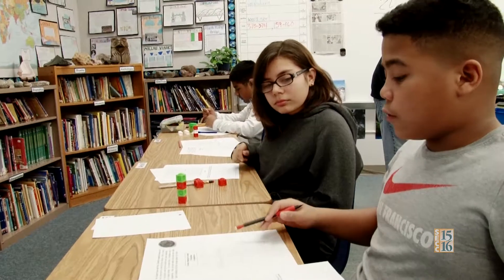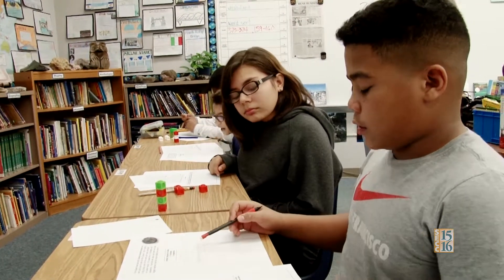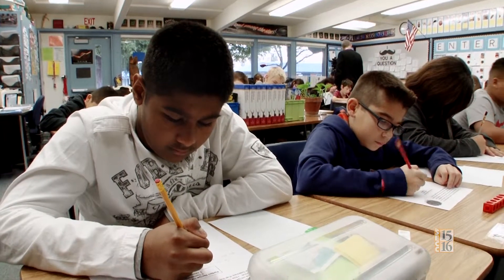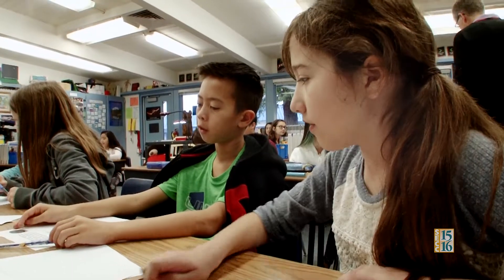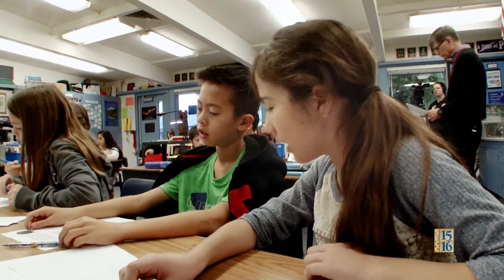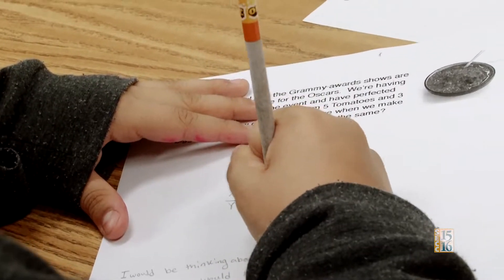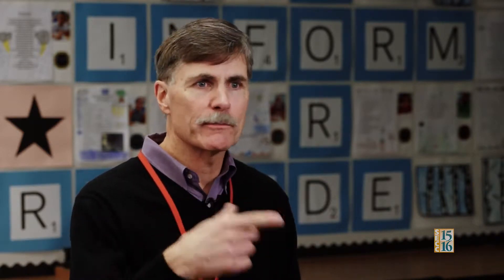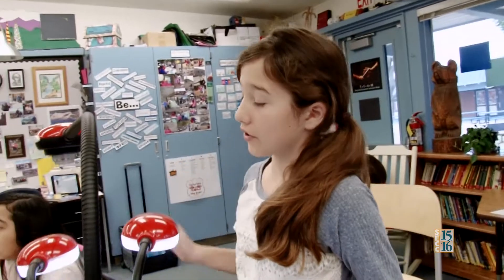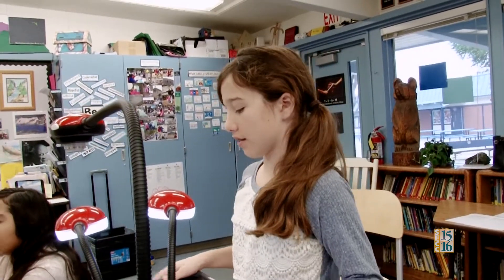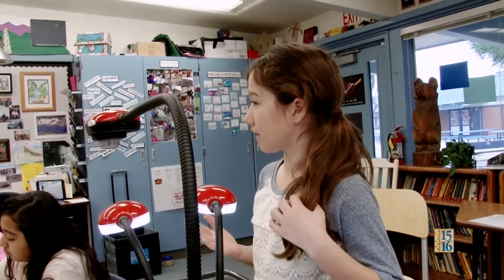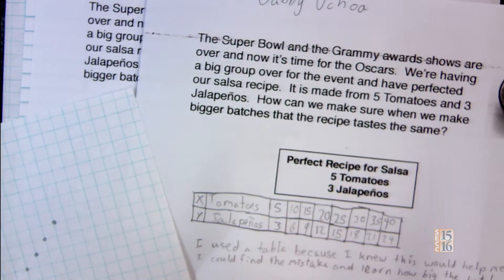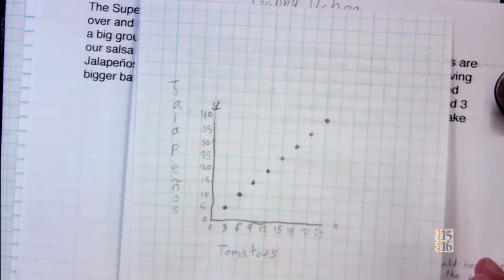As the lesson progressed, we went more into them looking at different ways to show how you could increase the salsa recipe without changing the flavor. Some students on their own decided they could graph this, and then it formed a line — that wasn't something I told them, that was something they discovered. One student said: 'I first made the table because I was thinking this could help me figure it out easier than just doing multiplication,' and then graphed them using the numbers they needed.